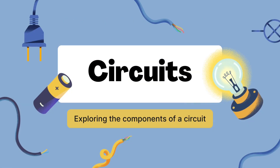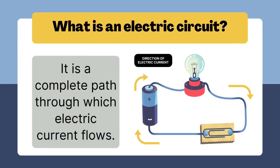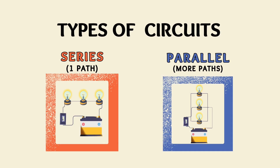Now let's talk about circuits. An electric circuit is a complete path through which electric current flows. It always flows from the positive to the negative end of the circuit. There are two types of circuits: series circuit and parallel circuit.